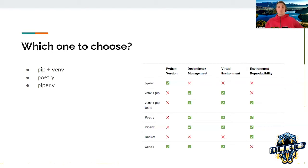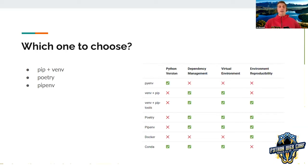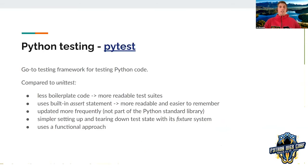You also have some other tools to consider. There's a table where you can check which tool does which job. If you want to manage Python versions, dependencies, and virtual environments, I suggest combining pyenv with Poetry or pyenv with pipenv. Once your environment is stable and your teammates can recreate it, you can move further to the Python testing topic and PyTest.